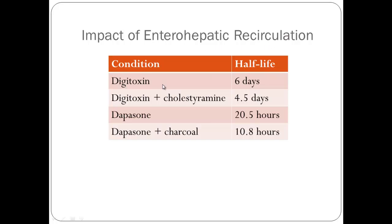This slide shows the impact of enterohepatic recirculation using two drugs — digitoxin and dapsone — both cleared through the biliary tract. The half-life of digitoxin is normally about six days. If we add cholestyramine, which binds digitoxin in the gut when it's excreted back out, preventing reabsorption, the half-life is shortened to four and a half days. Similarly, dapsone has a normal half-life of 20.5 hours, reduced to about half when activated charcoal is added, which works the same way. These drug interactions provide evidence that enterohepatic recirculation is occurring.